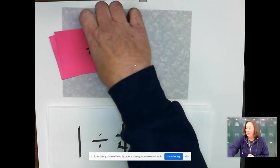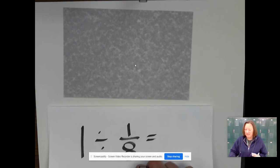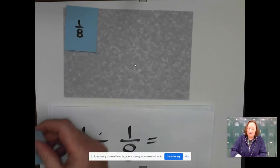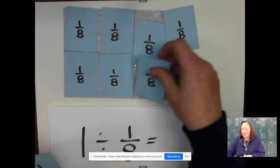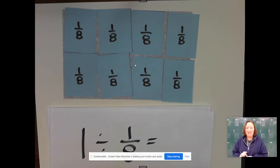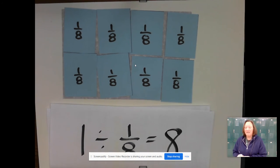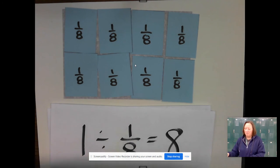So 1 divided by 1/4 is one, two, three, four—there are four pieces that size. If I had 1 divided by 1/8, hopefully by now you wouldn't even need to put the pieces down because you're going to say, well I know it takes eight parts to make a whole. One, two, three, four, five, six, seven, eight.